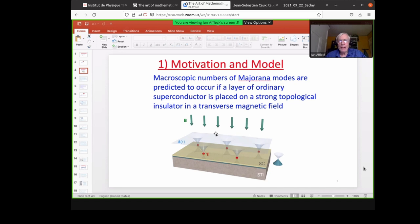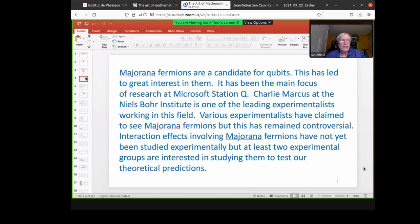A macroscopic number of Majorana modes are predicted to occur if a layer of ordinary superconductor is placed on a strong topological insulator in a transverse magnetic field, as is illustrated here. So it's predicted that there's a Majorana mode at the center of every vortex. So this has led to great interest in them. It's been the main focus of research at Microsoft Station Q. Charlie Marcus at the Niels Bohr Institute is one of the leading experimentalists working in the field. Various experimentalists have claimed to see Majorana fermions, but this has remained controversial. Interaction effects involving Majorana fermions have not yet been studied experimentally, but at least two experimental groups are interested in studying them to test our theoretical predictions.